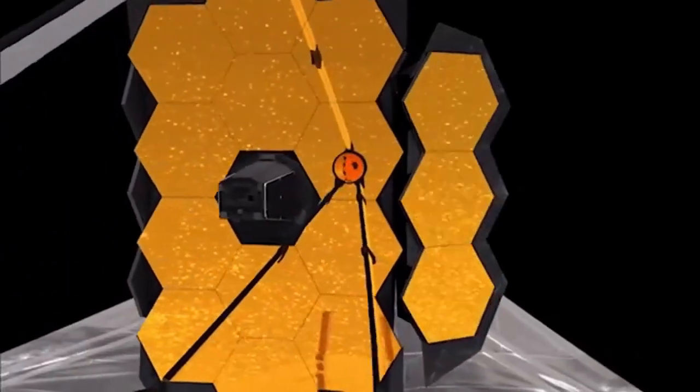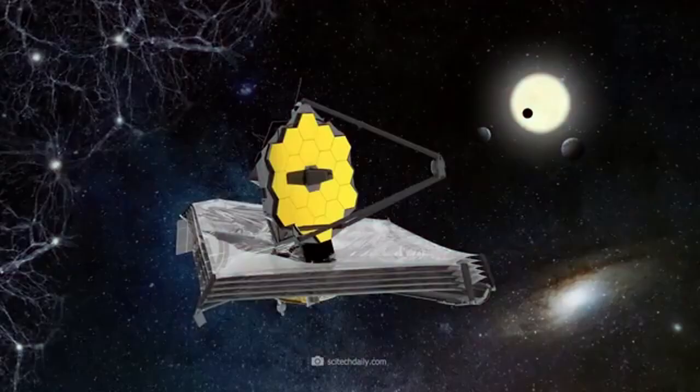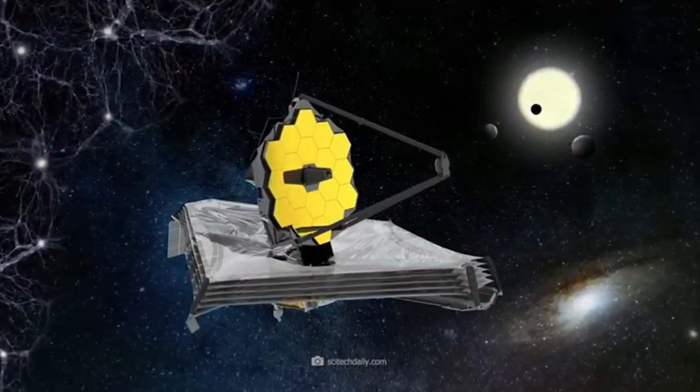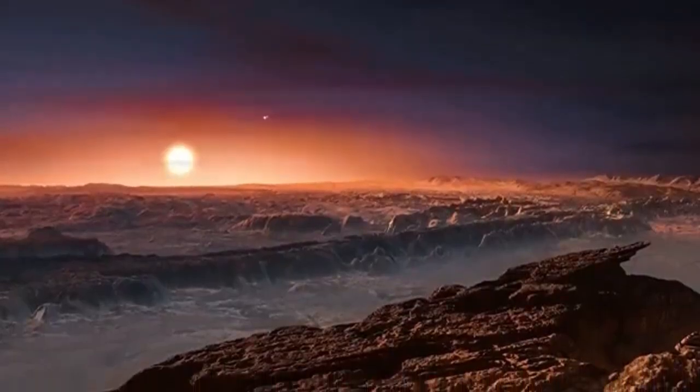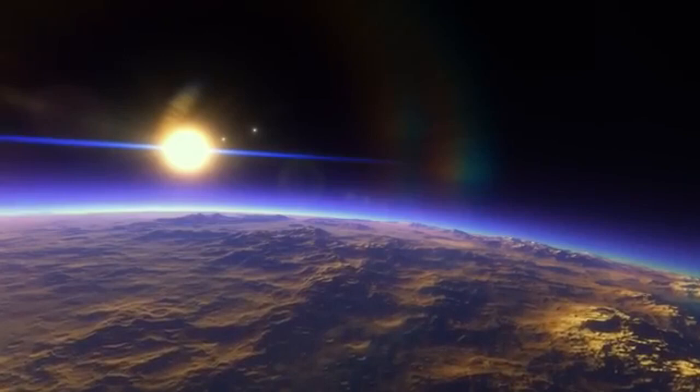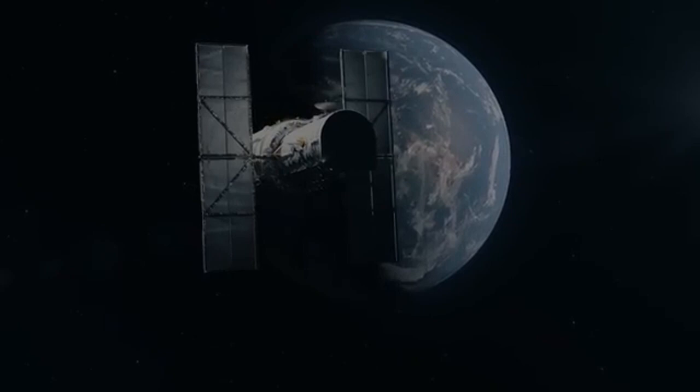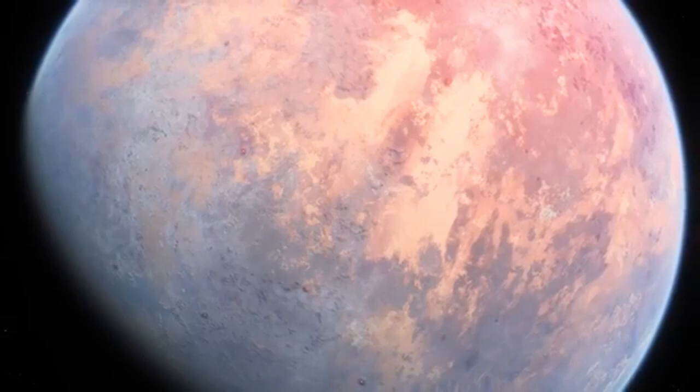This significant finding propels the exploration of exoplanets to new heights, spurring further investigations into Proxima b's atmospheric composition, surface features, and potential biosignatures. Understanding the intricacies of this neighboring exoplanet holds the promise of unveiling insights into the broader questions of habitability and the prevalence of life beyond our solar system. The remarkable aspect of this discovery lies in the fact that Proxima b occupies the habitable zone of its star, sparking tremendous enthusiasm within the scientific community. There is a possibility that this rocky planet may house conditions suitable for liquid water, an essential ingredient for the emergence and sustenance of life as we know it.